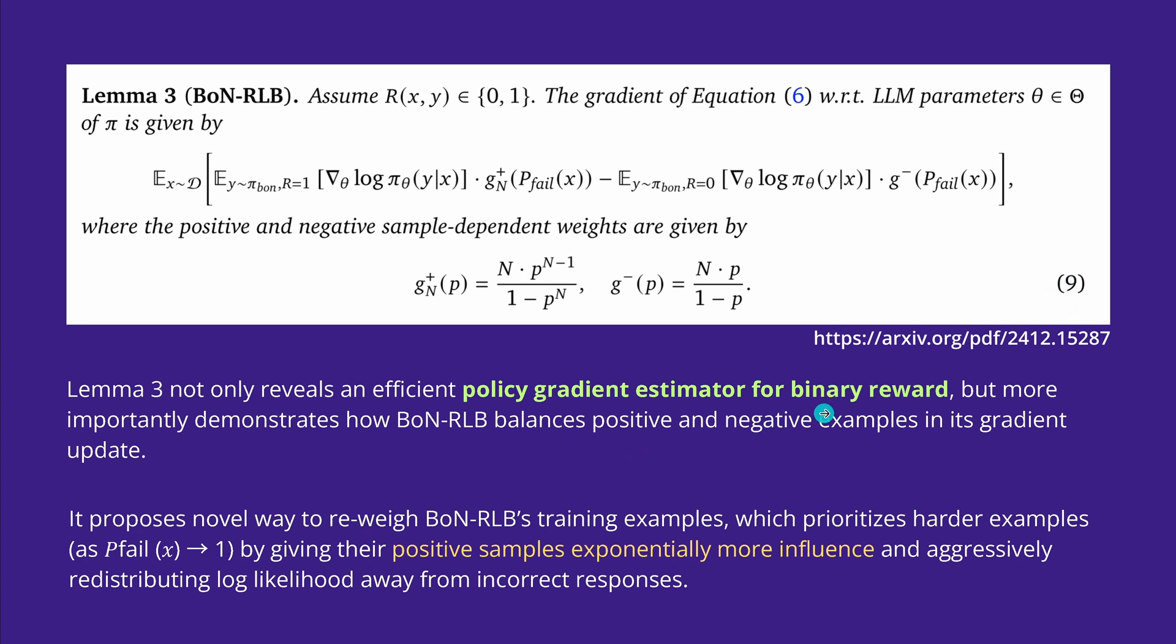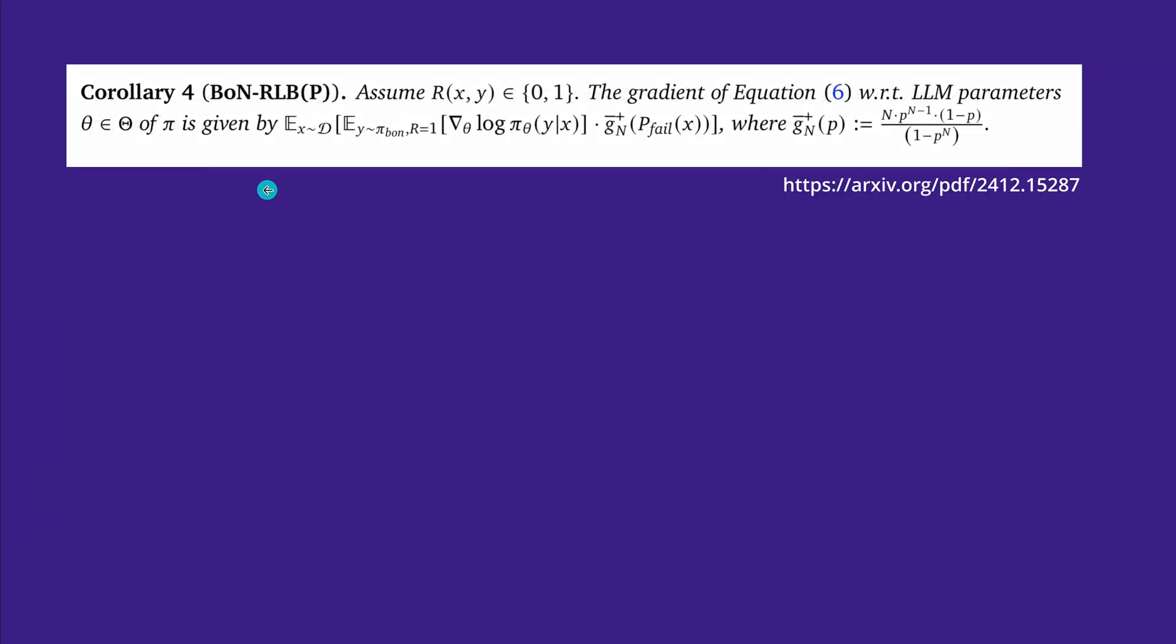you can also choose to only go with positive samples. So you don't have a re-weighting of positive to negative samples. In this particular case, the positive samples have more influence over the negative examples. There's a methodology by Google that goes only with the positive, so you weigh only on the positive weights. Then the formula becomes even more simplified.